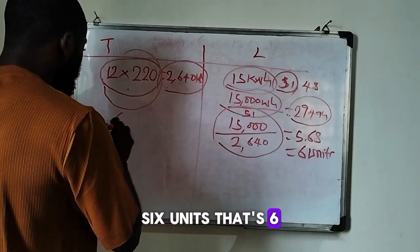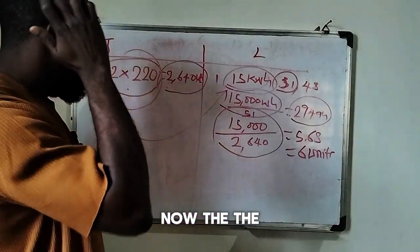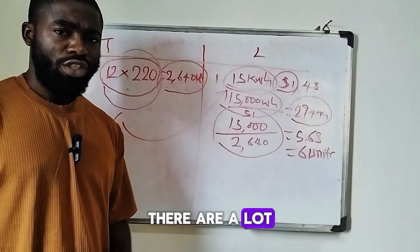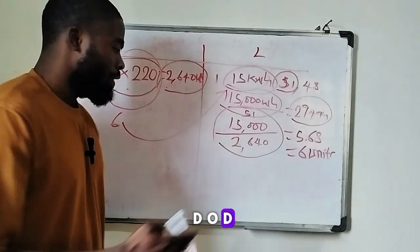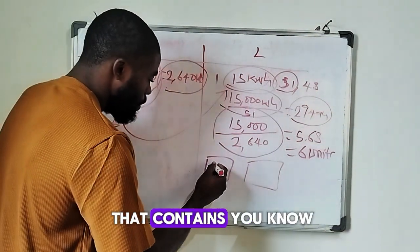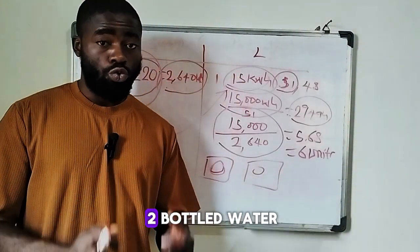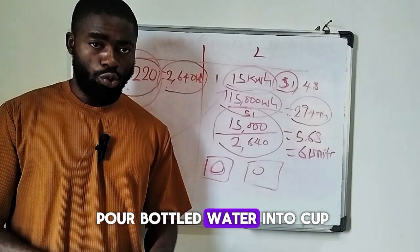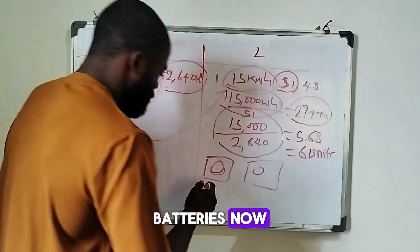So 6 units of 220Ah tubular battery is equal to 1 unit of a 15 kilowatt-hour lithium battery — that is the simple mathematics. Now, the place where most installers go wrong is when it comes to DoD. Let me explain something about battery banks. A battery bank is simply a container that holds electricity — just like two bottles of water from different brands containing the same amount of water will pour out the same amount into a cup.